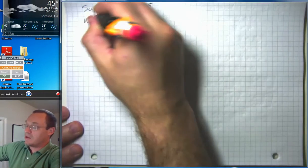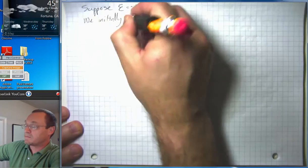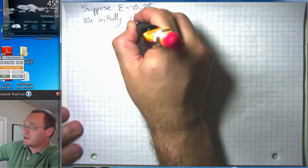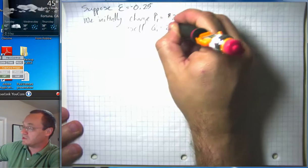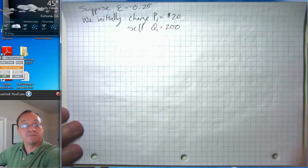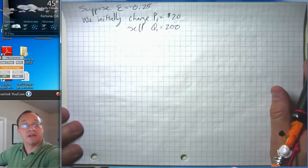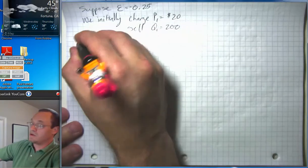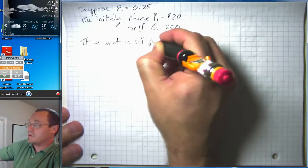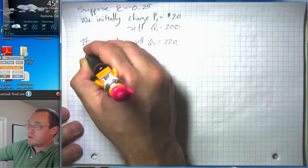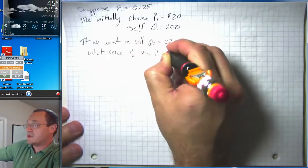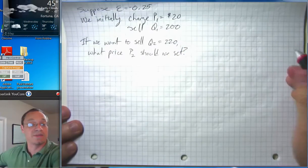And we initially charge P1 equals $20 and sell Q1 equals 200 units. Now suppose we want to increase the number of units sold. Suppose we want to sell Q2 equals 220 units. What price P2 should we set? So that seems like something that might be worth knowing.